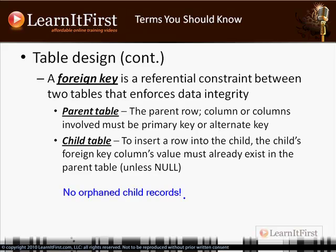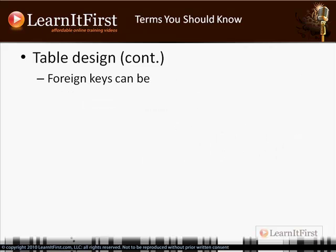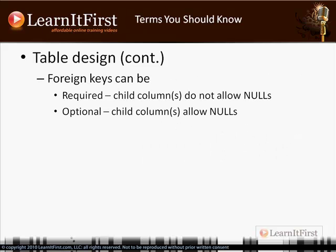We'll get into code examples to deal with that in more depth in the next couple of chapters — we won't really get to it until the chapter on joins. For now, just understand parents and children, no orphan child records. With foreign keys, you can make them required or optional — we'll cover that again a little bit later.